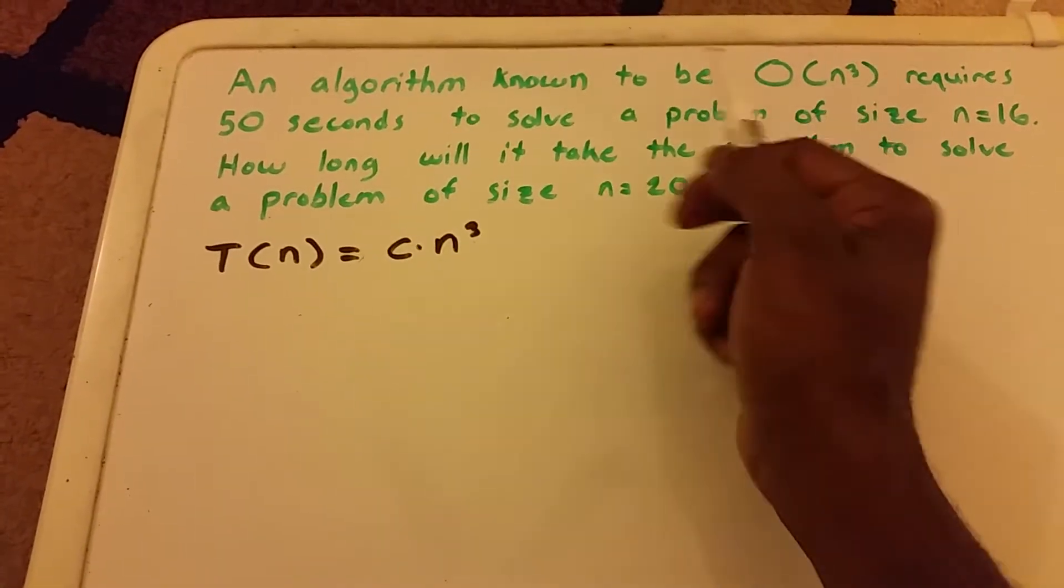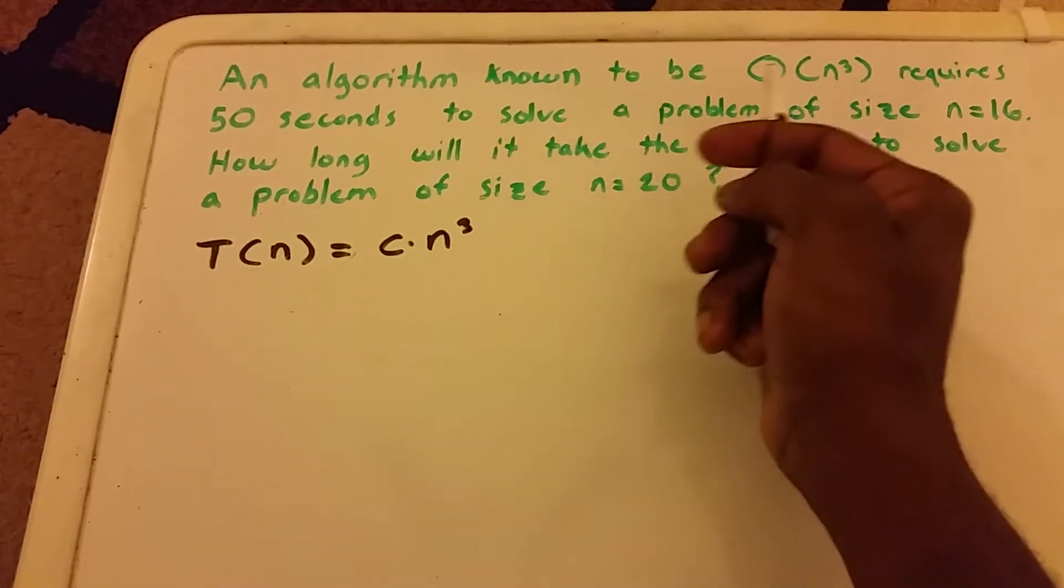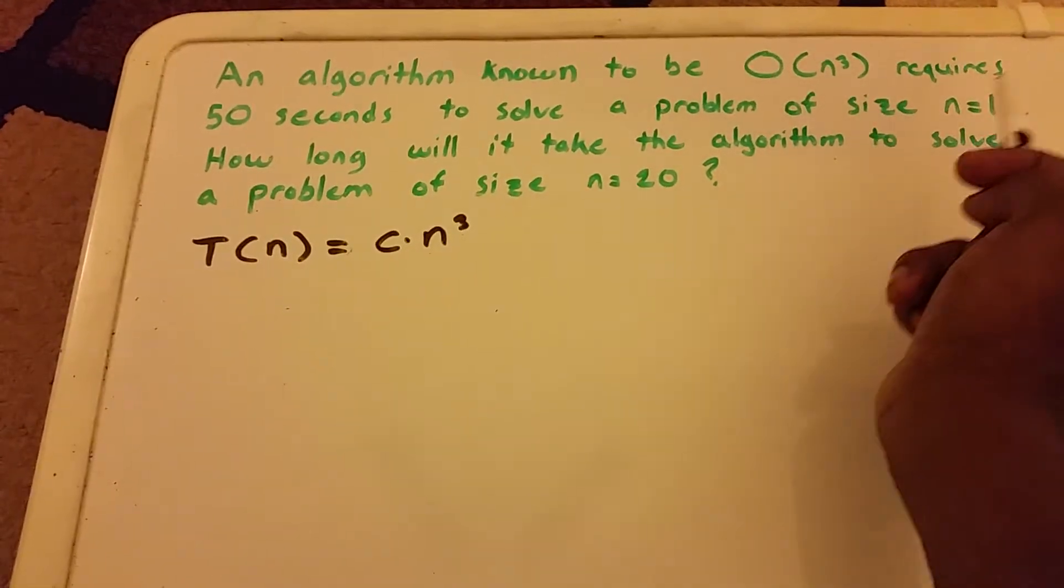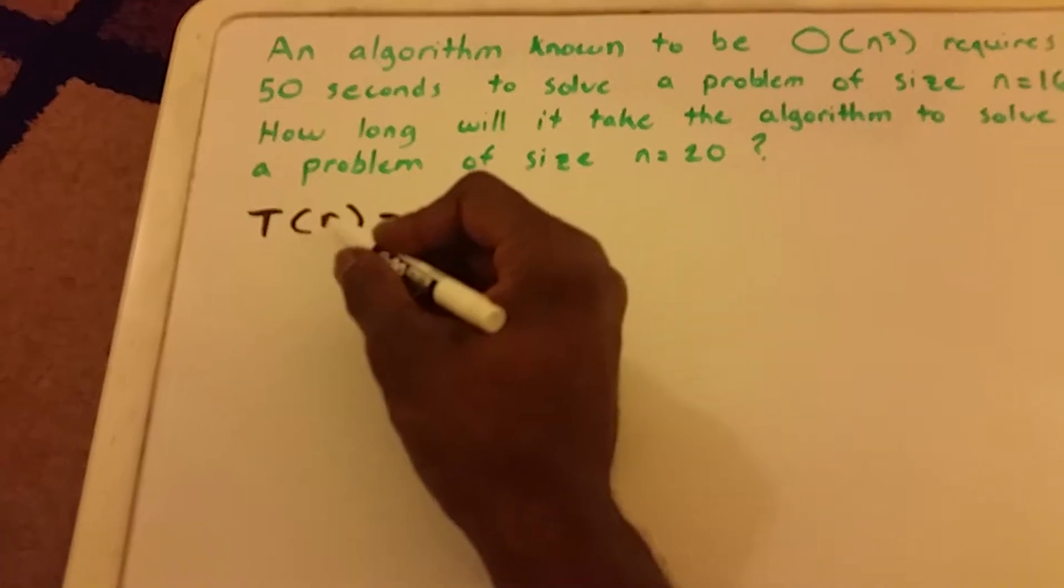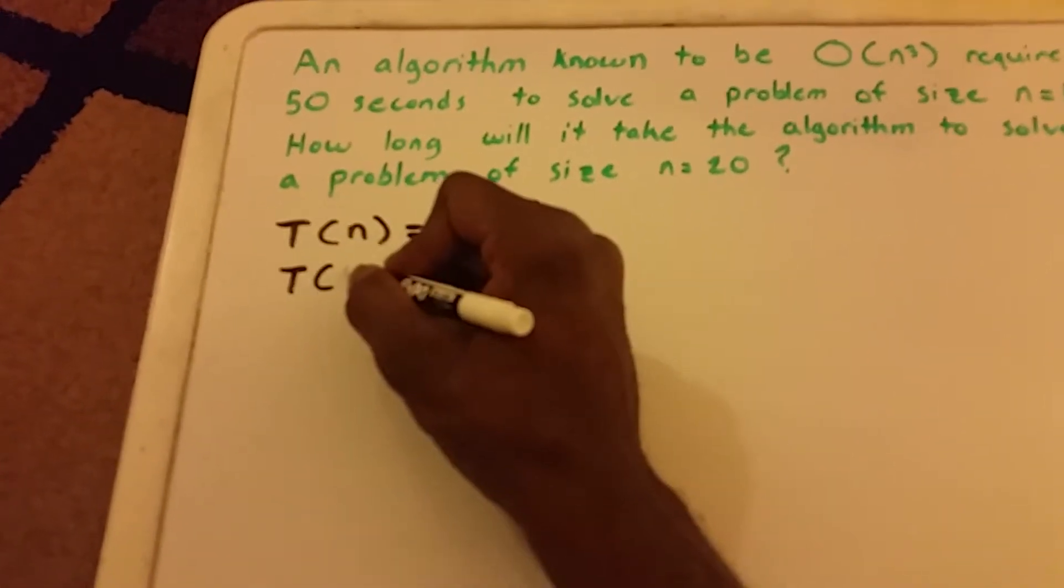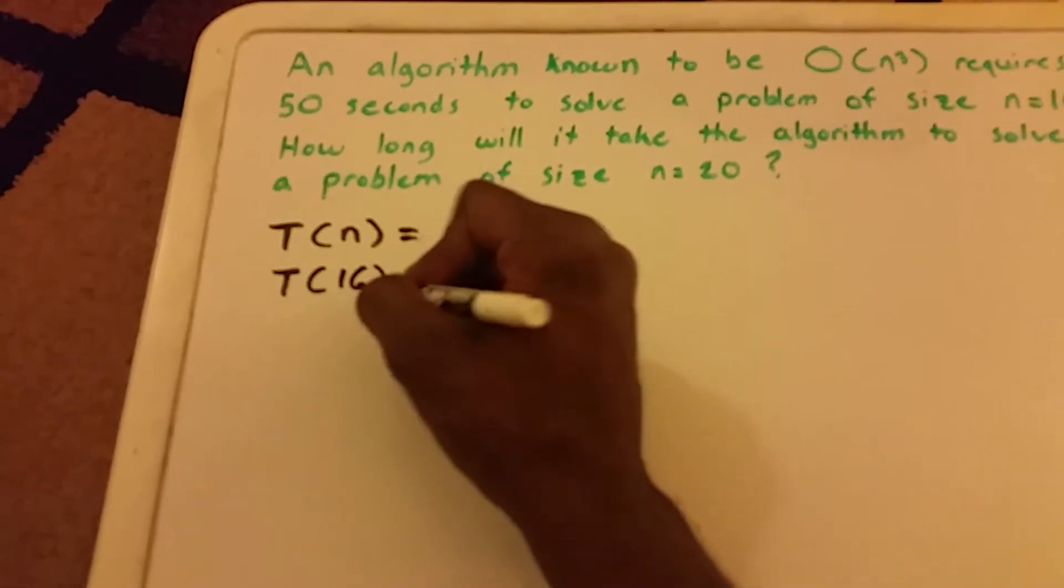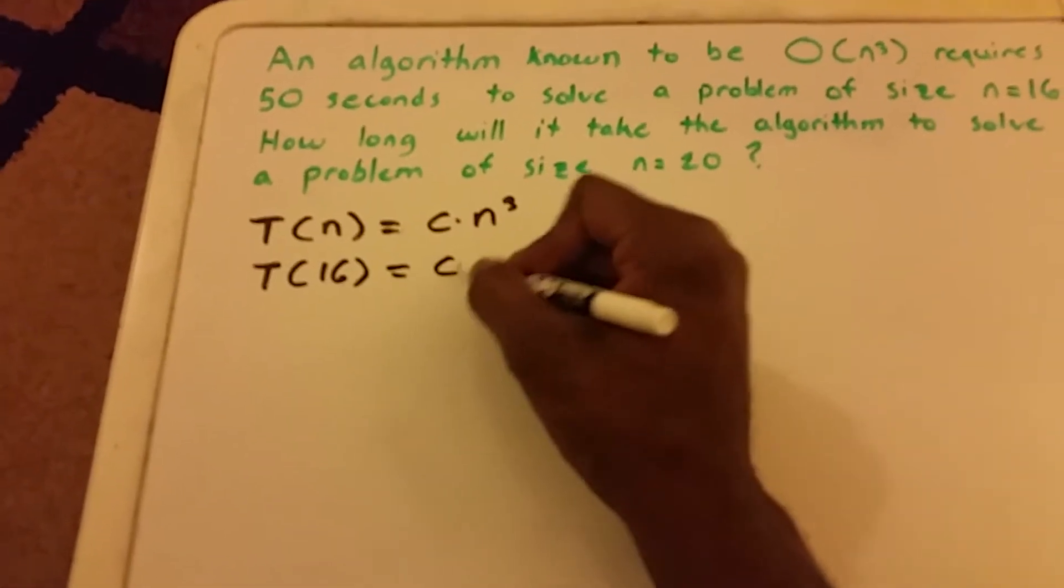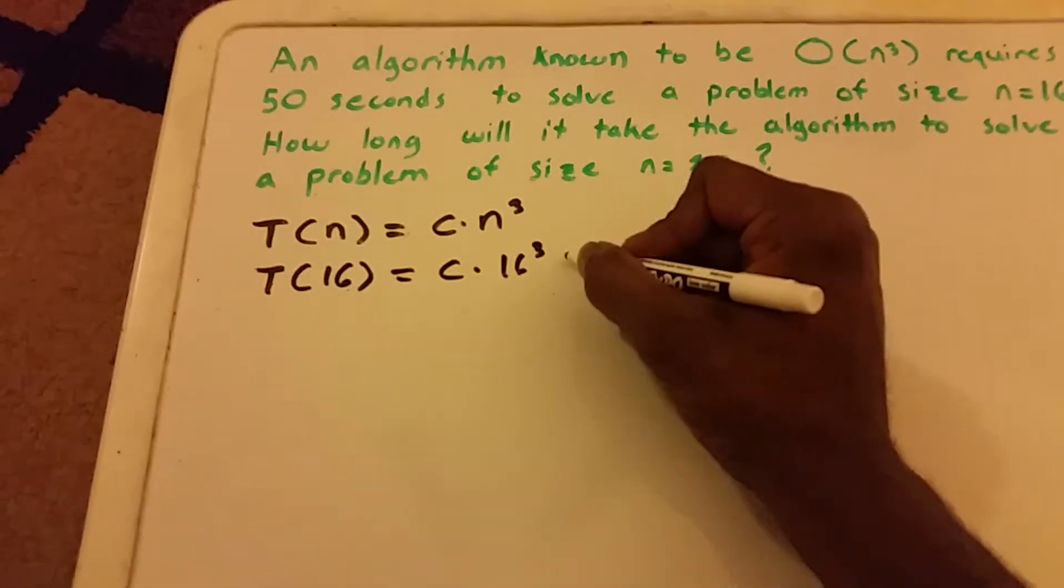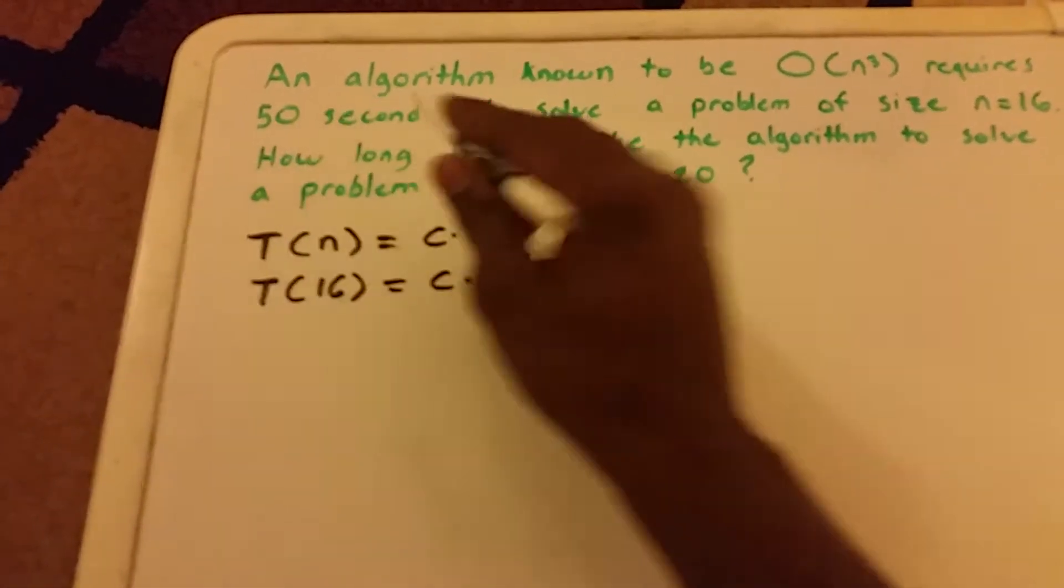It says that an algorithm known to be big O of n cubed requires 50 seconds to solve a problem of size n equals 16. So our input size is n, and T of 16, that's our input size, is equal to some constant times 16 cubed. And it equals 50 seconds.